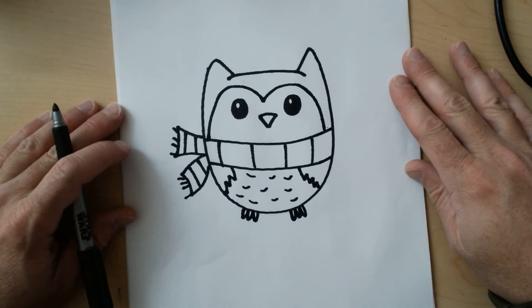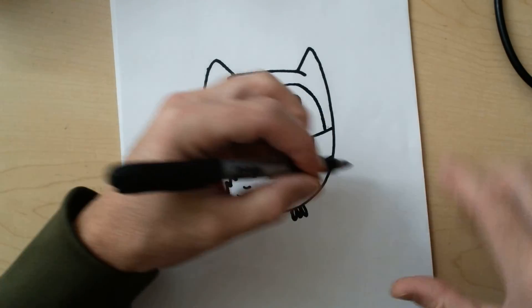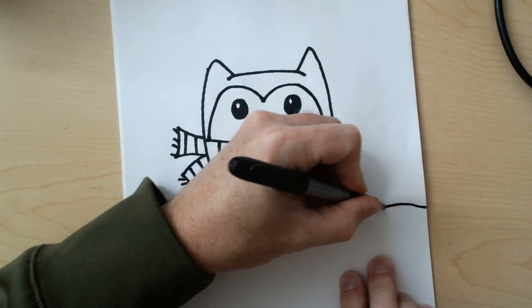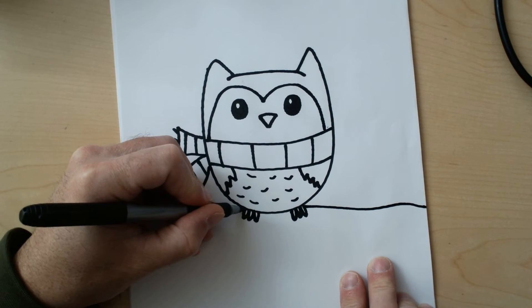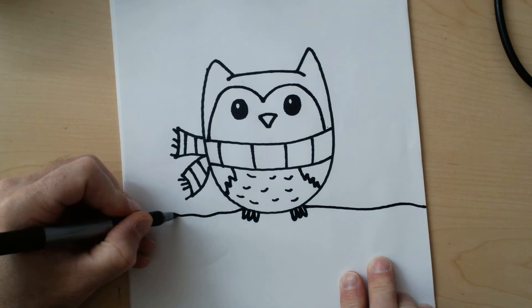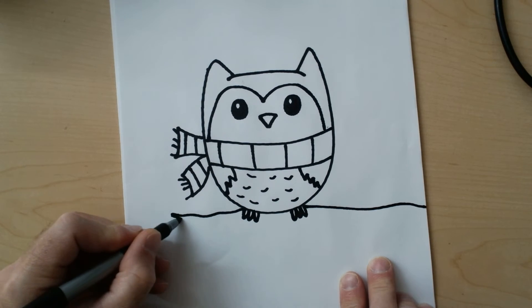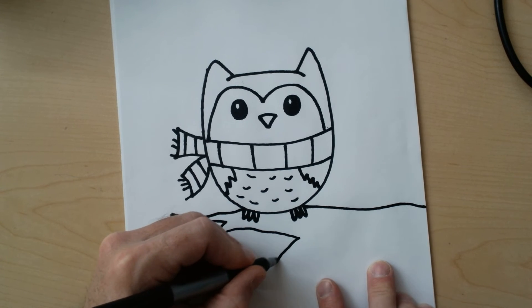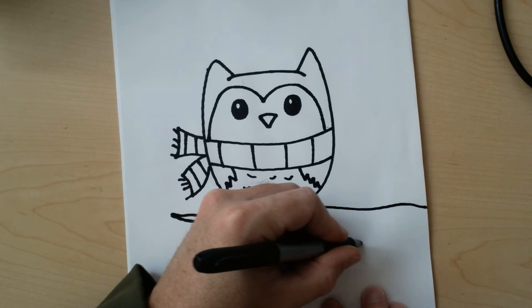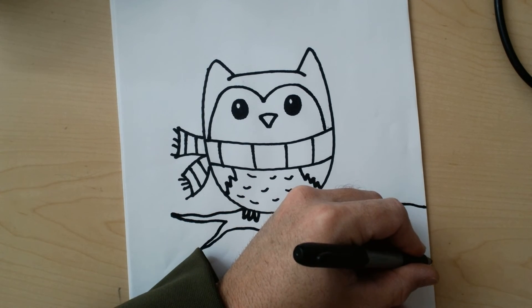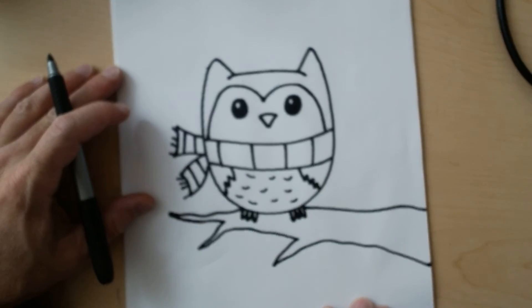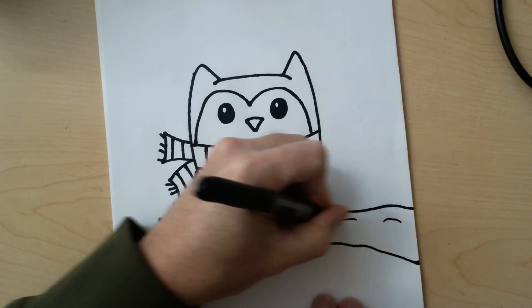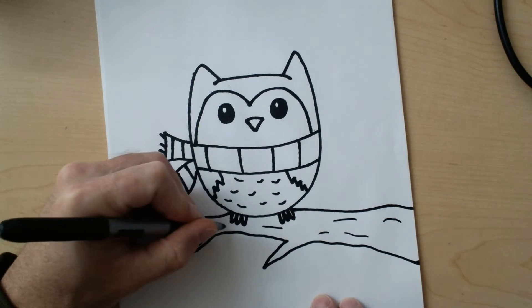And I think our little baby owl needs to be sitting on a tree branch. What I'm gonna do is from the side of the paper, I'm gonna draw a line, not perfectly straight, coming through the owl like this, and make a few little branches sticking out. Now it looks like he's on a tree branch, and I like to add a few little lines in here to give it texture.